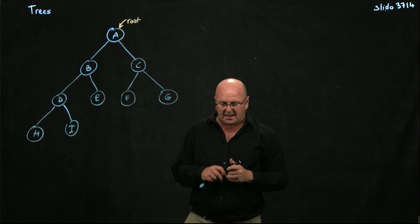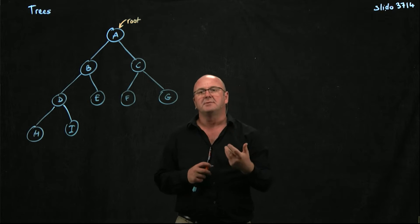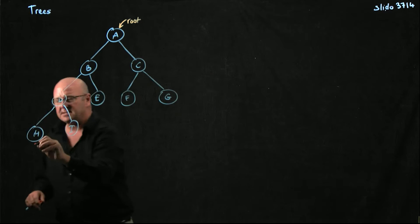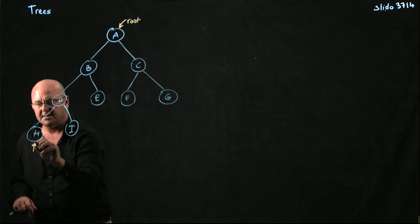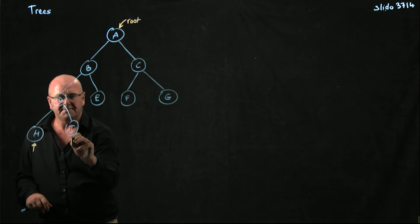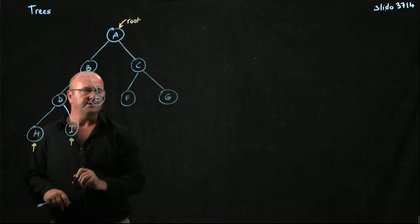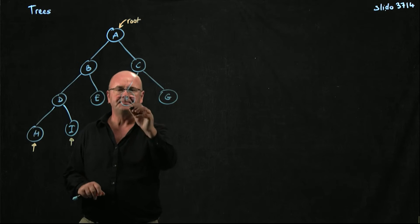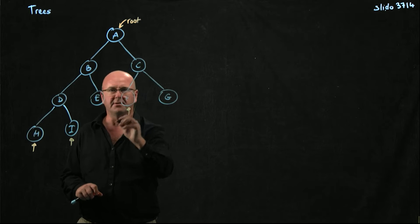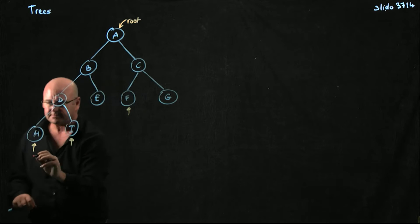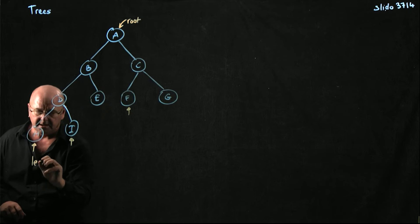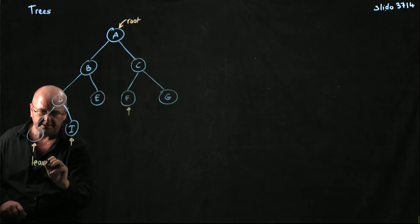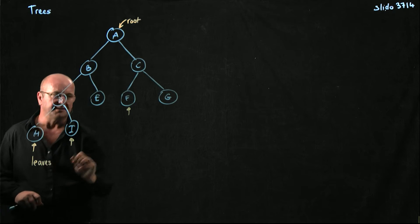And keeping up with the tree analogy, the things that have no children — which is sad for them, not really — are called leaves.